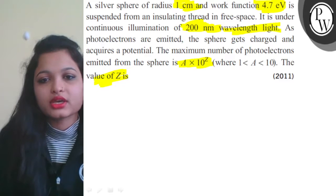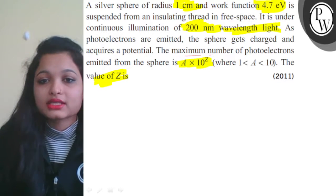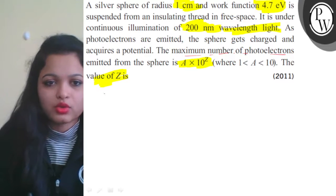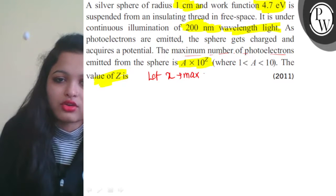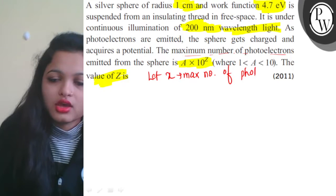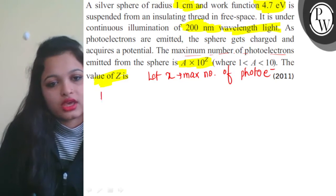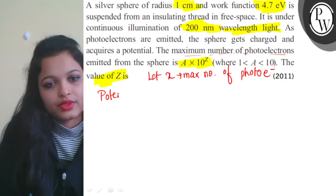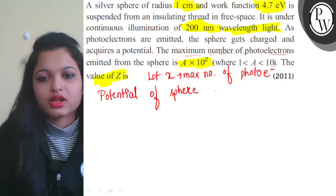First, let x be the maximum number of photoelectrons emitted from the sphere. So we consider x as the maximum number of photoelectrons.